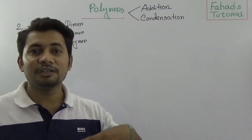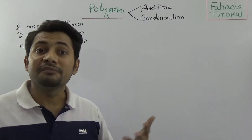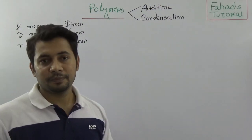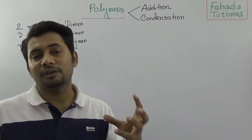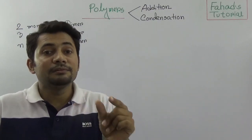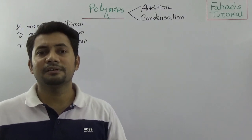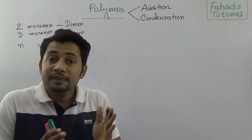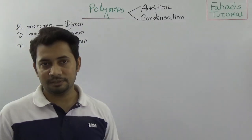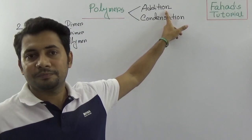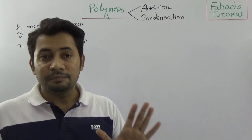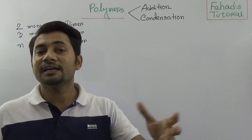Examples of addition polymers include polythene, polypropene, and polyvinyl chloride. These are addition polymers. In the case of condensation polymers, when the tiny molecules or monomers attach to each other, they release some other molecules like carbon dioxide and water. PVC — we simply call it PVC, or polyvinyl chloride — is an addition polymer.